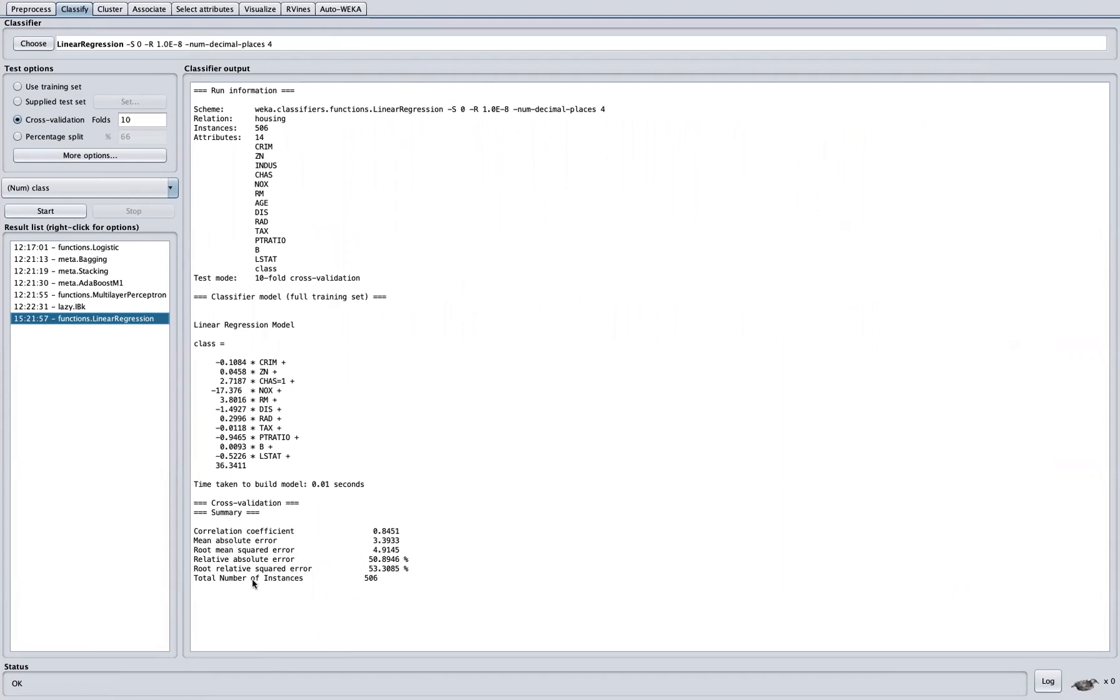But now, how do we derive or how do we get the R squared? Essentially, R squared will just be 0.8451 times 0.8451. So essentially, you multiply this by 2, and you will get that the value here is 0.714. That would be your R squared.